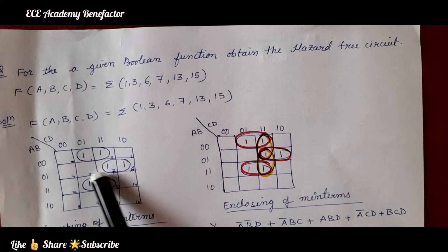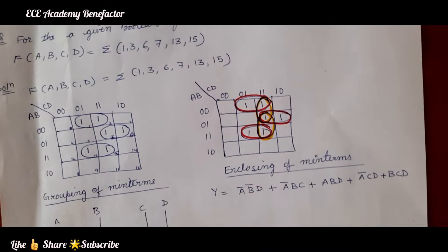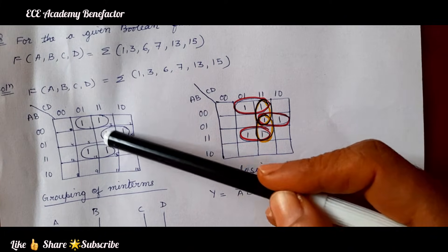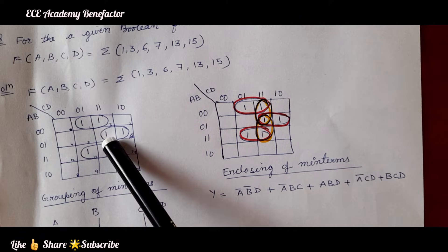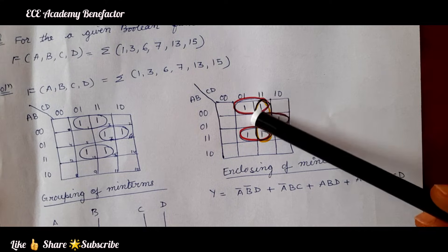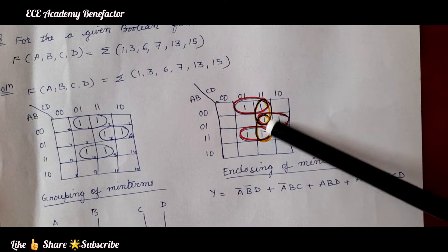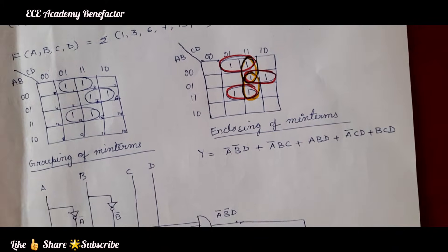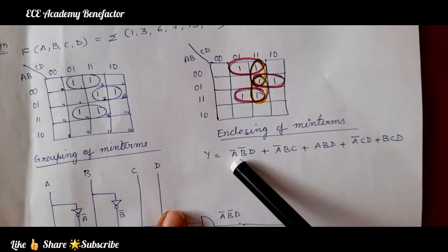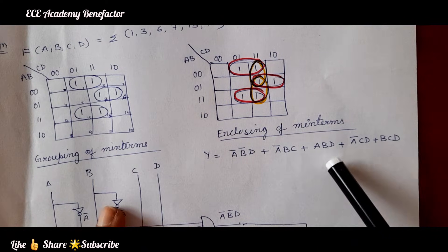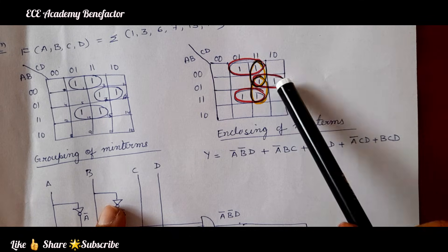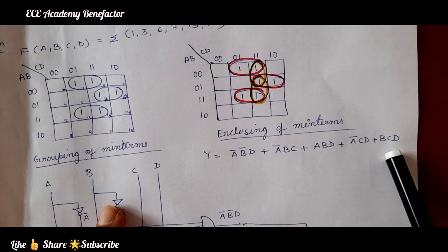We are having 3 terms from the initial grouping of minterms. To make this circuit hazard free, we have to do enclosing of nearby 1s — one enclosing here and another enclosing here. By this K-map solution we are getting 3 terms from standard grouping, but after enclosing we will be getting 5 terms. The expression from enclosing the terms is: A'B'D + A'BC + ABD + A'CD + BCD.